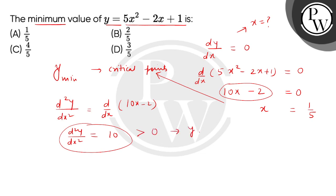We will find the value of y at x equals 1 by 5. y equals 5 multiplied by 1 by 5 square minus 2 multiplied by 1 by 5 plus 1. So this is 1 by 5 minus 2 by 5 plus 5 by 5, which equals 4 by 5. So the correct answer is option number C. Thank you.